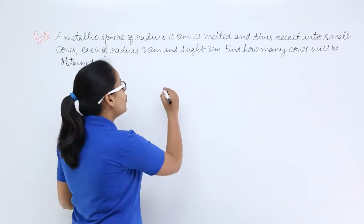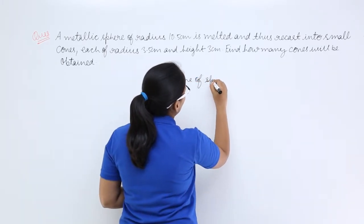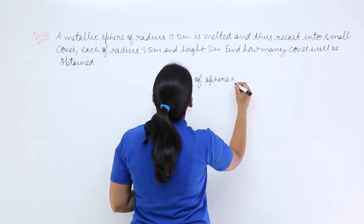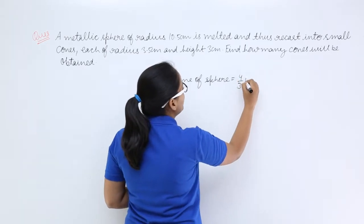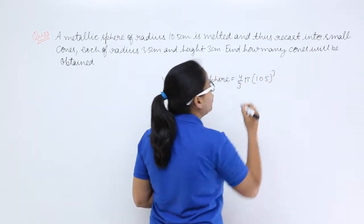So first of all, let's find out the volume of sphere which will be 4/3 π where the radius is 10.5 whole cube.